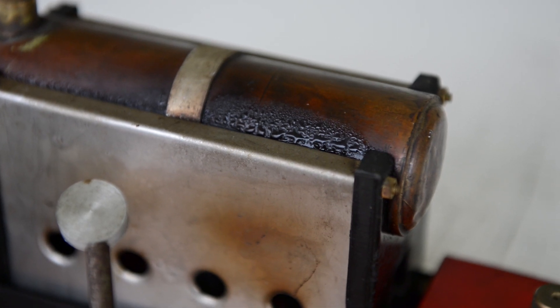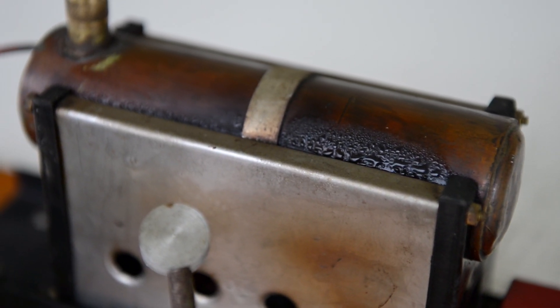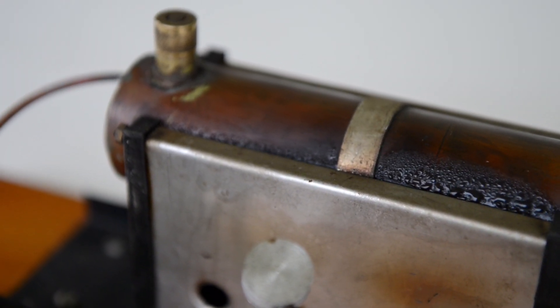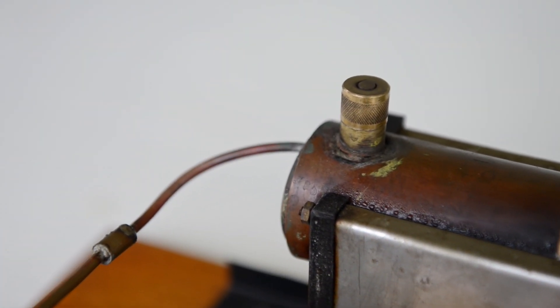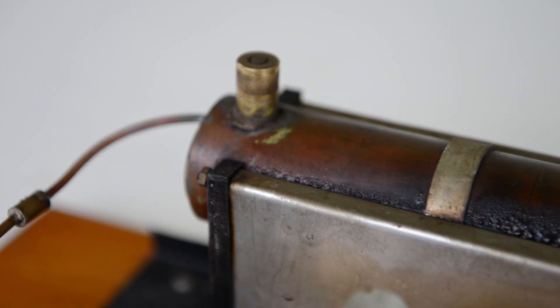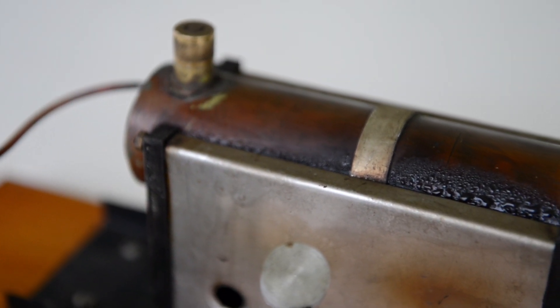As you can see here, there is some moisture forming on the outside of the boiler. I'm not sure exactly why this happens. My guess is that it's condensation. If you have any ideas or know why this happens, let me know down in the comment section.